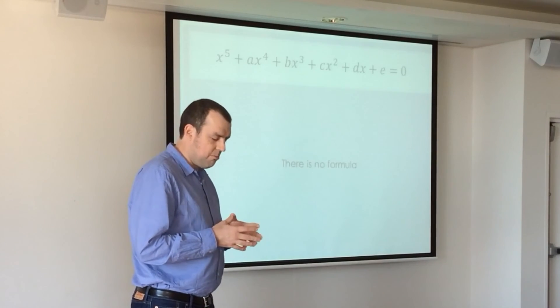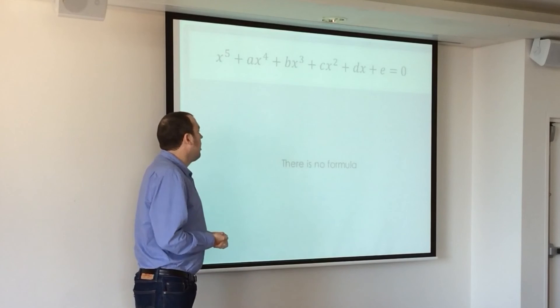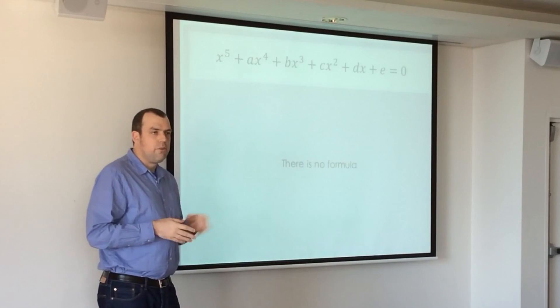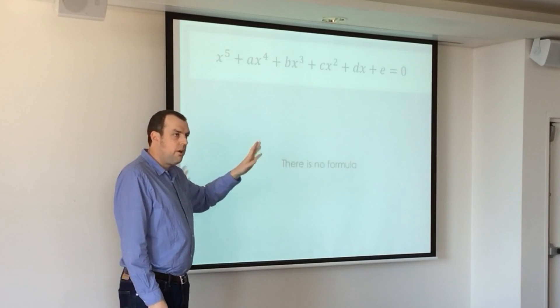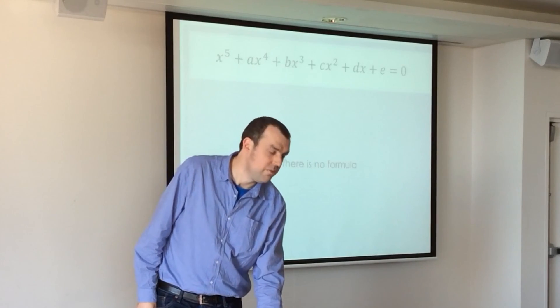Abel was the person, the first to prove that there is no solution, no general solution to the quintic. Now, I've known for many years that this had no solution, but I only learnt this week that it kind of does.